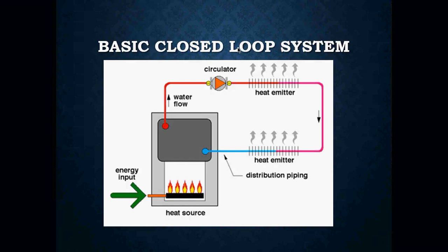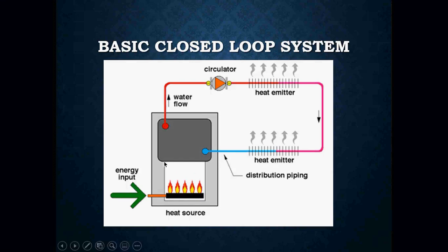Here's an example of a basic closed-loop system. We've got our heat source with energy input — this could be gas, oil, propane, or even electrical. Something that's going to heat up the water. Our boiler is filled with water. Here's our distribution piping — water comes out of the top through our circulator, which flows water through our circuit and through our heat emitters, and then makes its way right back to the boiler. That circle continues until the thermostat tells the boiler and everything else to shut off.